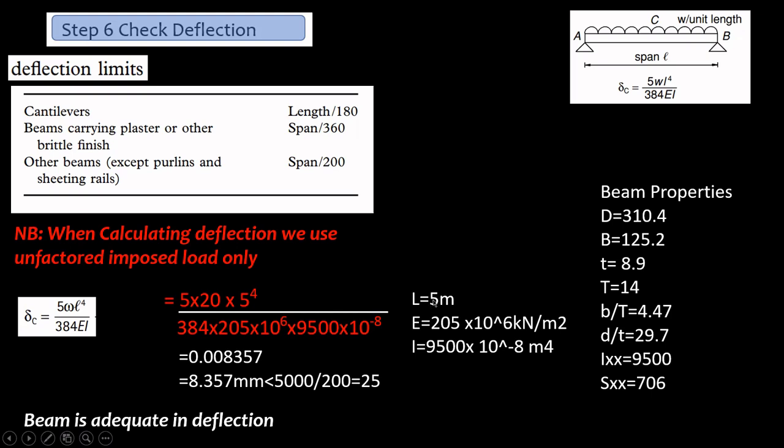So my E value, remember our E was 205 kN/mm², so what I've done I've converted it to kN/m². That's why I've multiplied here by 10⁶. I've multiplied this by 10⁶ to convert it to kN/m².